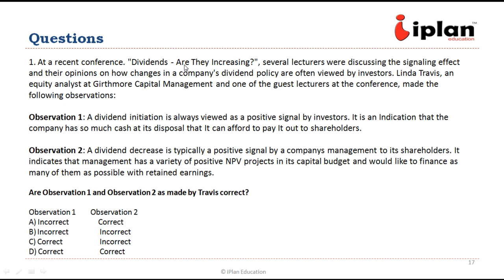At a recent conference on increasing dividends, several lecturers discussed the signaling effect and how changes in a company's dividend policy are viewed by investors. Linda Travis, an equity analyst, makes two observations and we need to check which are correct. Observation one says a dividend initiation is always viewed — note the word 'always' — as a positive signal by investors, indicating the company has so much cash it can afford to pay shareholders. This cannot always be true; sometimes it could indicate the company does not have enough projects to invest in, which is a negative signal. So observation one is incorrect.